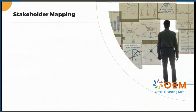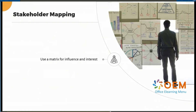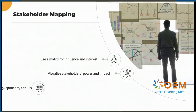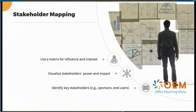Following this, we will explore the second stage of our process: stakeholder mapping. This visual tool helps you identify and categorize stakeholders based on their influence and interest in the project. Stakeholder mapping typically involves creating a matrix with influence on one axis and interest on the other. Stakeholders are then plotted on this matrix, allowing you to see who has the most power and who is most affected by the project. For instance, in a software development project, high-influence stakeholders might include the project sponsor and key clients, while high-interest stakeholders could be end users and customer support teams.